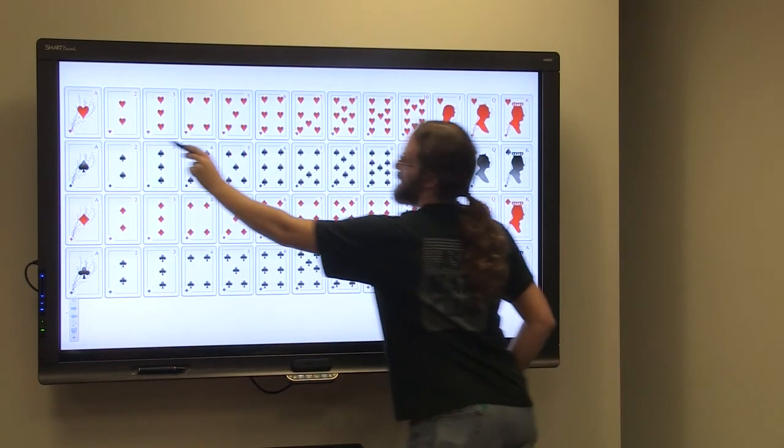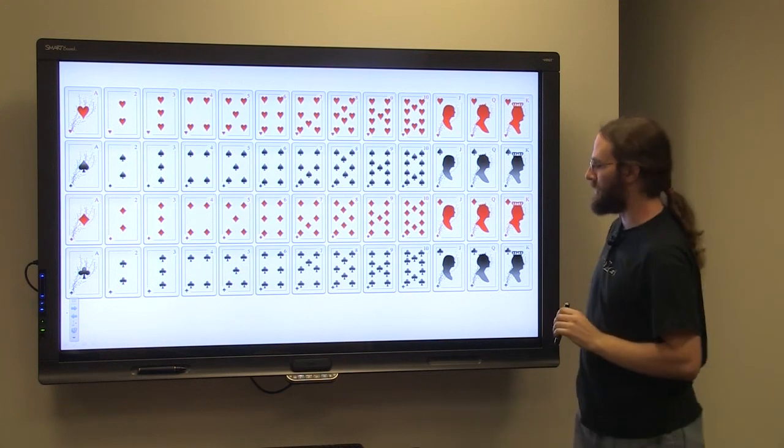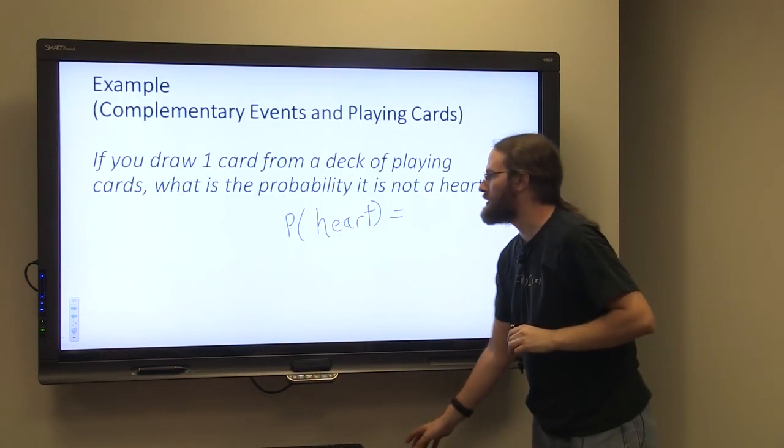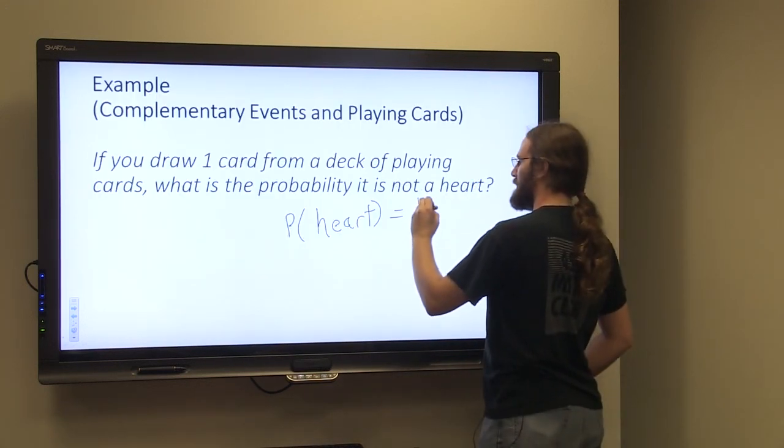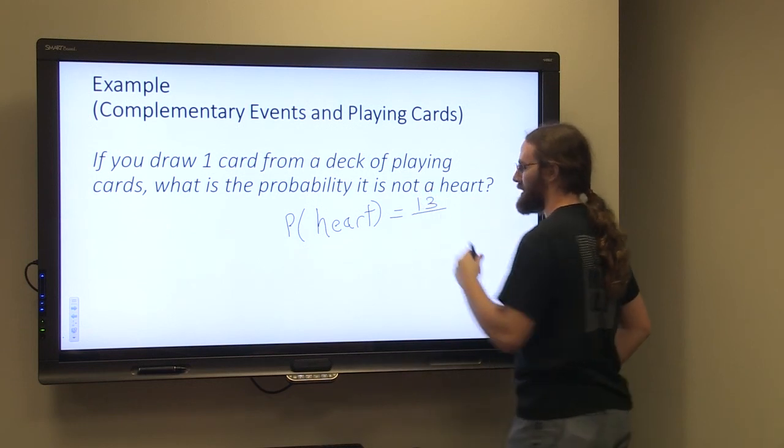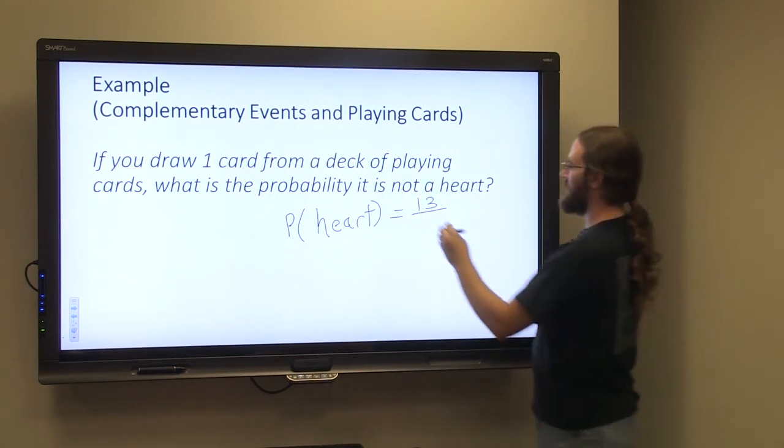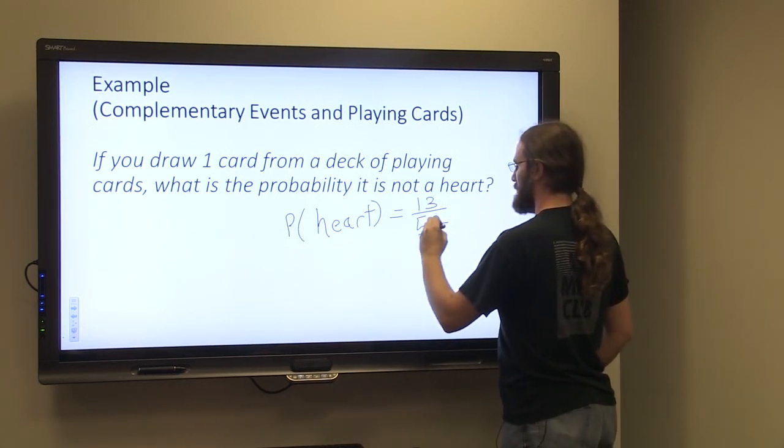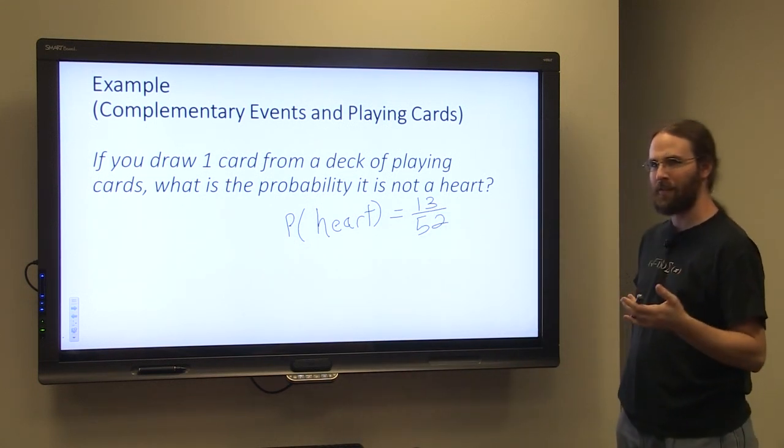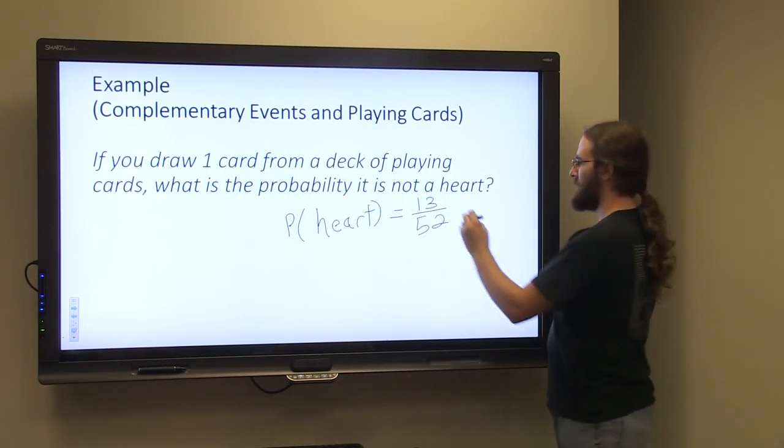So up here are my hearts. I can count here. There were 13 hearts. So there were 13 ways to succeed, 13 ways to draw a heart, out of 52 possible outcomes. So you have a 13 in 52 chance of drawing a heart.